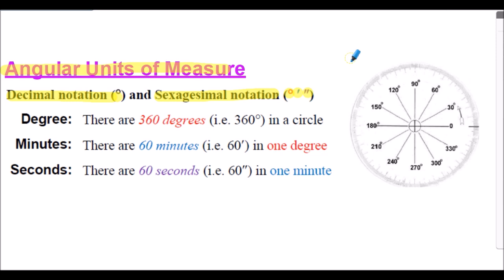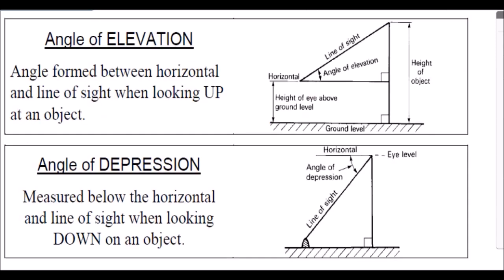For further information about the angular units we're going to use, you can refer to the introductory presentation on trig ratios. Now for slightly new terminology: some of the questions refer to the angle of elevation. That's an angle formed between the horizontal and the line of sight when looking up at an object. In this diagram the angle of elevation is the angle measured above the horizontal.